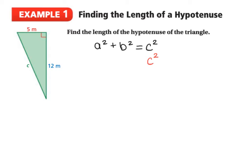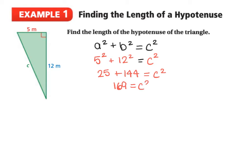We want to substitute the values we have for our legs A and B — the order does not matter. So I'll choose to have 5 as my A, so 5 squared plus 12 squared. Then 5 squared is 25, plus 12 squared is 144, so 25 plus 144 is equal to C squared. That gives us 169 is equal to C squared.